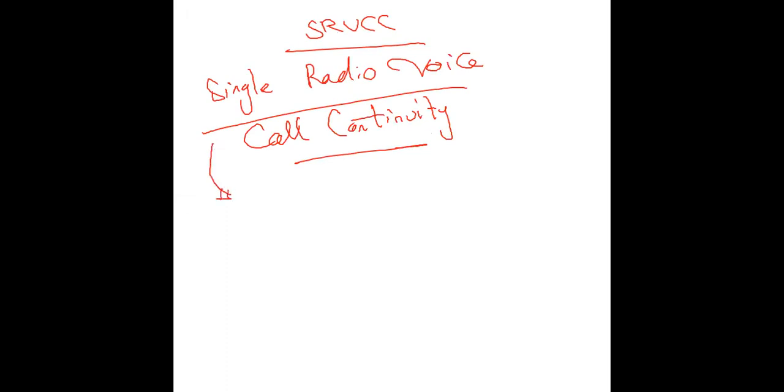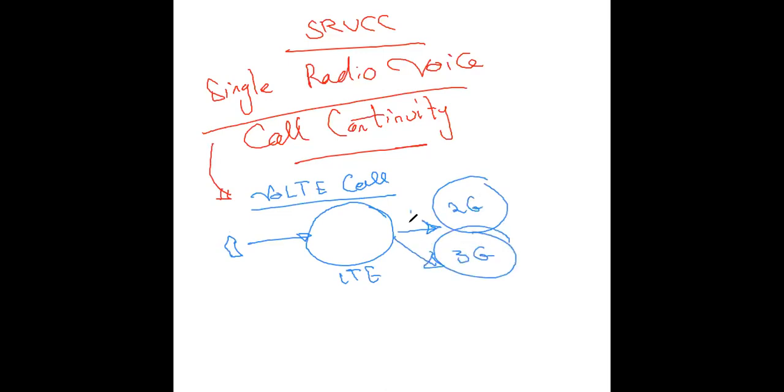First, this happens when we have already a VoLTE call. So we have now a VoLTE call and the mobile will move out from LTE coverage to 2G or 3G coverage or no LTE coverage.